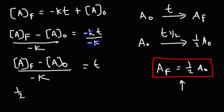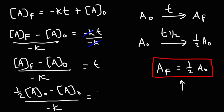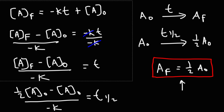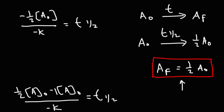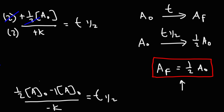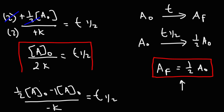Replacing A final with one-half A initial and T with T sub one-half, we get: one-half A initial minus A initial equals negative K times T one-half. One-half minus one is negative one-half, so we have negative one-half A initial over negative K. The two negative signs cancel to give a positive result, and multiplying the top and bottom by two simplifies the expression to A initial over 2K. That is the half-life equation for a zero-order reaction.